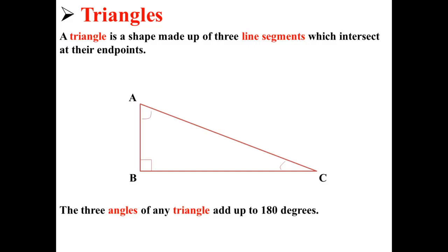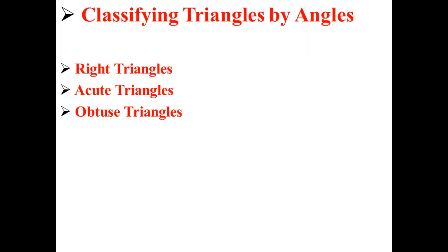The three angles of any triangle add up to be 180 degrees. We can classify triangles by their angles as either right triangles, acute triangles, or obtuse triangles.